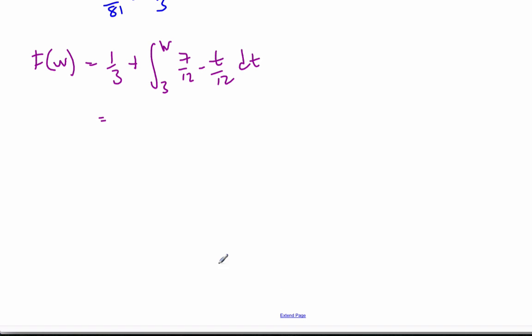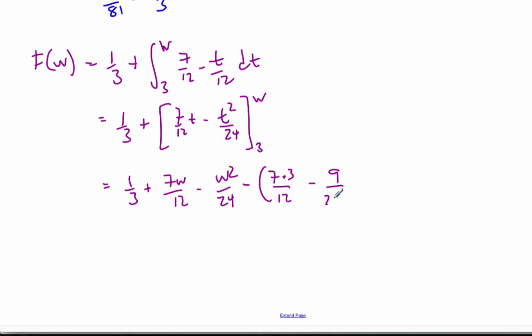I come along, I do the integral, I do some calculus on this. I get 1/3, which is the first area part, plus 7 over 12 t minus t squared over 24, from 3 to W, which equals 1/3 plus, now I have to be careful here, 7W over 12 minus W squared over 24, subtract 7 times 3 over 12 minus 9 over 24. If I do my arithmetic here,